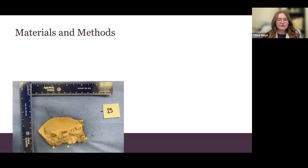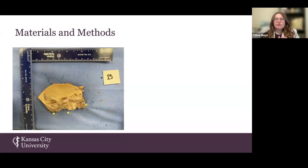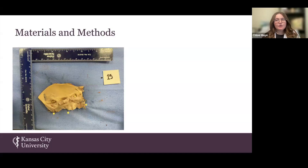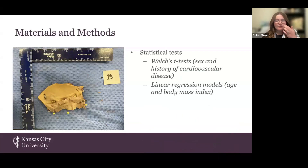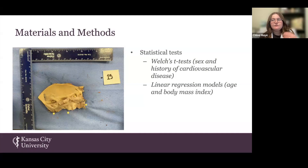Aortas were detached from the heart and pinned flat against a cushioned surface in order to obtain our measurements more accurately. We used digital calipers to gather triplicate measurements, which were later averaged. Then we compared our measurements across biometric information and medical history using Welch's t-test for sex and history of cardiovascular disease, and linear regression models for age and body mass index.